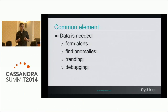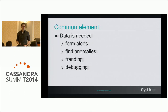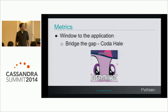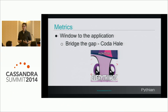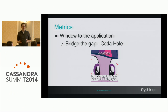For both proactive and reactive approaches, what you really need is data — you need metrics. You need to be able to form the alerts, to see trending, to be able to debug problems after they've happened. As Coda Hale says, you need to bridge the gap between how you think the application is running and how it's actually running. These are the windows to the application.